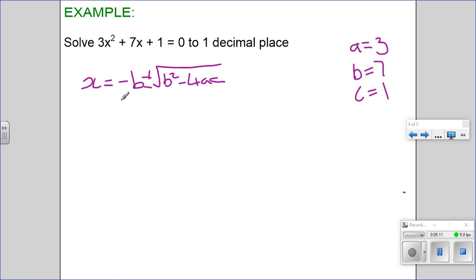-b ± √(b² - 4ac) / 2a. Let's substitute in our values: -7 ± √(7² - 4 × 3 × 1) all divided by 2 × 3.